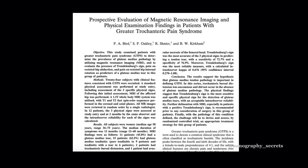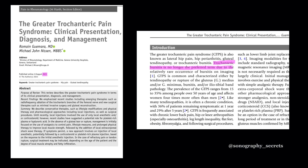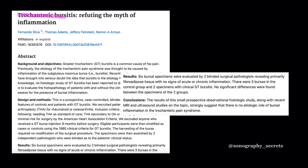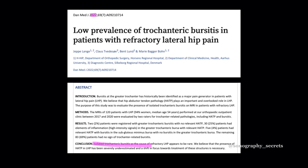Isolated trochanteric bursitis is not a thing. This is one of the more quoted papers on the subject from Bird et al., who concluded that trochanteric bursal distension was uncommon and did not occur in the absence of glute medius pathology. A 2023 paper even stated that trochanteric bursitis is no longer the preferred term due to the relatively rare occurrence of bursitis on imaging. A histological study looked at bursas removed in patients undergoing total hip arthroplasties and found no evidence of acute or chronic inflammation under the microscope. And from 2022, Langer et al. concluded that isolated trochanteric bursitis as the cause of refractory lateral hip pain appears to be rare.